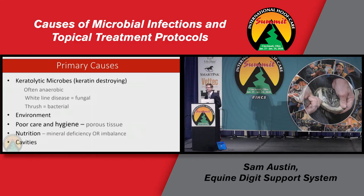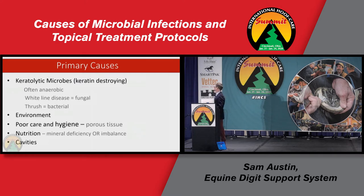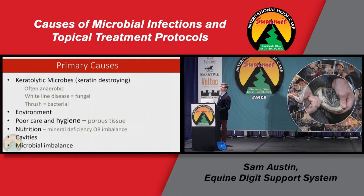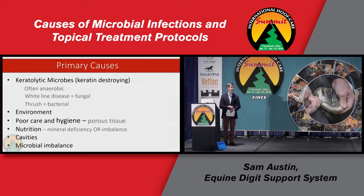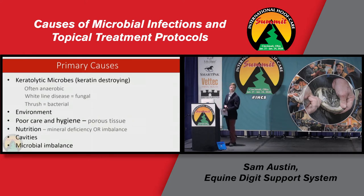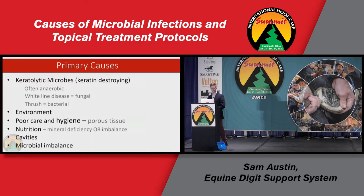It can be that they have too much of a particular mineral or there's an imbalance. White line cavities and deep central sulcus cavities provide perfect habitats for microbes. A fairly new consideration is microbial imbalance. In our guts and on our skin, we have a mixture of good and bad bacteria. The bad bacteria tend to be pathogenic, while good bacteria feed on those bad bacteria and keep the balance in check. It would be naive to think that wasn't the case on the equine foot as well. So we need to keep in mind that we want good bacteria to thrive on those feet.